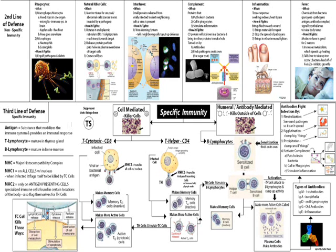There are two types of specific immunity: cell-mediated and humoral-mediated. Bacteria can basically be inside of a cell or remain outside of the cell. Cell-mediated immunity is going to kill bacteria that are inside cells.